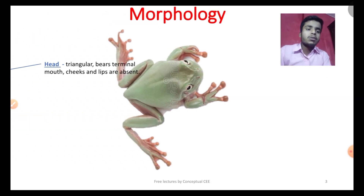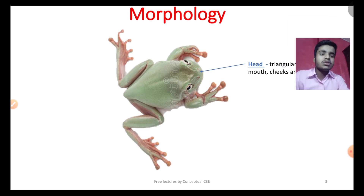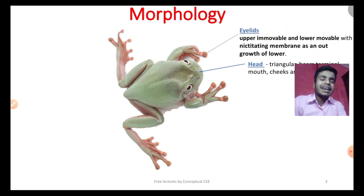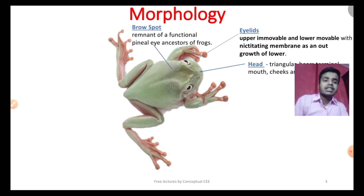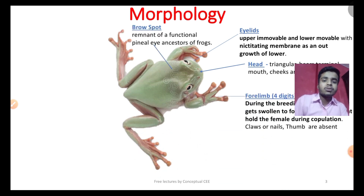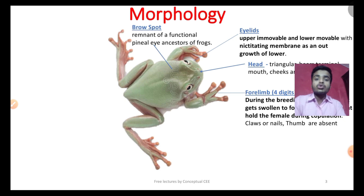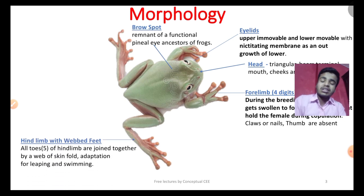Next, morphology: the head is triangular, no cheeks, no lips. We studied the eyelids — upper movable, lower movable. The nictitating membrane is the outgrowth of the lower eyelid. We have the brow spot and pineal gland remnant. The frog has four limbs — forelimbs with four digits, digital configuration 02233, and hindlimbs with webbed digits 54323.